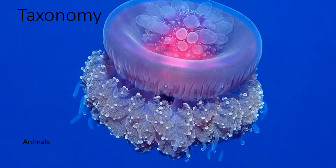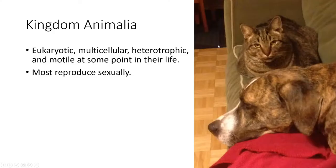What makes an animal an animal? They have complex cells, so they're eukaryotic. They are all multicellular. We have to be able to ingest our nutrients, so we're heterotrophic because we can't make our own. At some point in the life cycle we're motile or capable of movement — even a sponge has a motile larval form even if the adult doesn't move. Most animals have some form of sexual reproduction, which increases genetic diversity.